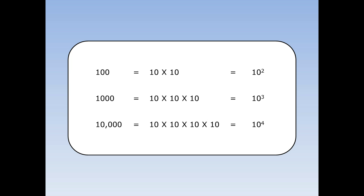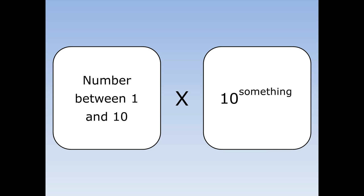Notice that at a hundred there are two zeros, and it's equal to ten to the power of two. In a thousand there are three zeros, and it's equal to ten to the power of three. Ten thousand has four zeros, and it's equal to ten to the power of four. A number written in standard form is always a number between one and ten, times ten to the power of something.